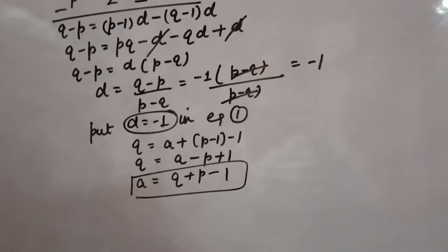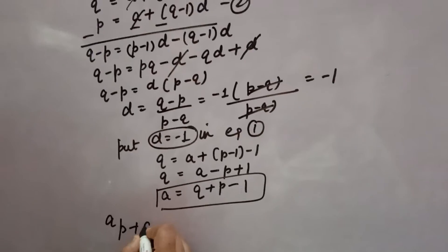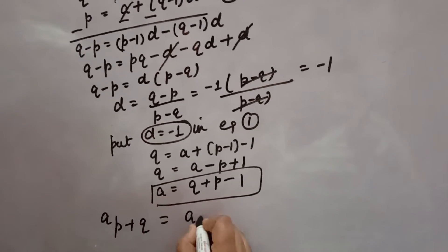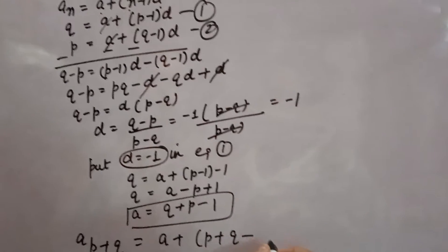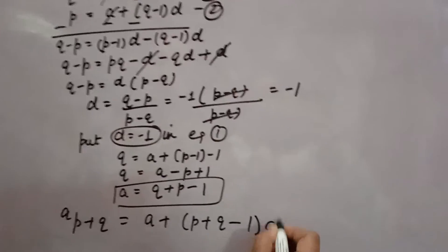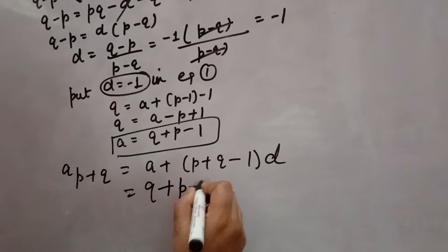Now we want the value of the (p+q)th term. The formula is A + (p+q-1)D. We'll substitute A = Q + p - 1 and D = -1.